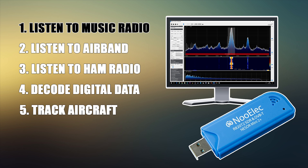Hi and welcome back to another Tech Minds video. In this video we're going to be looking at five cool things you can do with an SDR receiver. SDR stands for software defined radio — essentially it's a radio receiver which is controlled by your PC or Mac using some SDR software. Today the software we're going to be using will be SDR Sharp by AirSpy, and the SDR USB dongle we're going to be using is a NooElec.